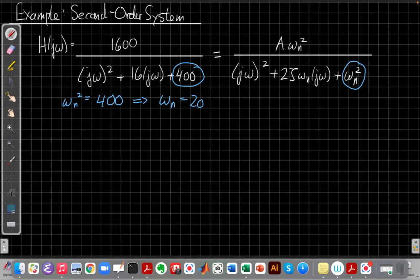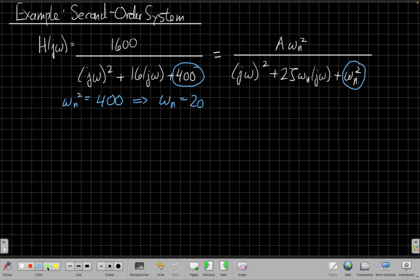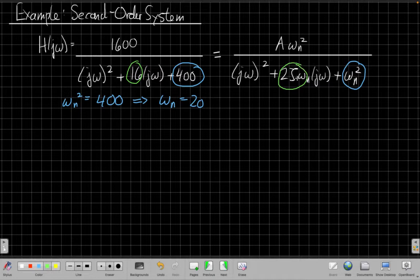And now I can go and solve in the center term, the jω term, to get the ζ coefficient, because now that I know ωn, I can set these equal. And when I do that, I'm going to match this constant to the 2ζωn over here, and say those two must be equal, so let me solve that for ζ since I know ωn now.